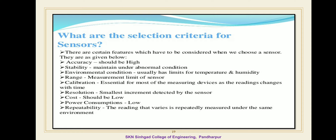Next is calibration, which is essential for most measuring devices as readings change with time. Then resolution: the smallest increment detected by the sensor. The cost of the ideal sensor should be low. Power consumption of the ideal sensor should also be low. Repeatability means the reading should be the same when repeatedly measured under the same environment, showing the same sensitivity over its entire operating range.